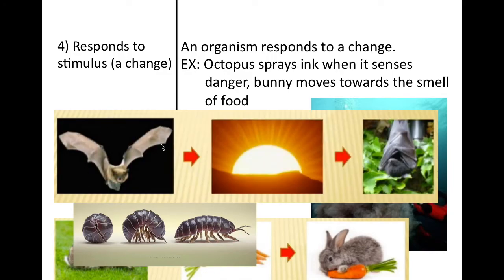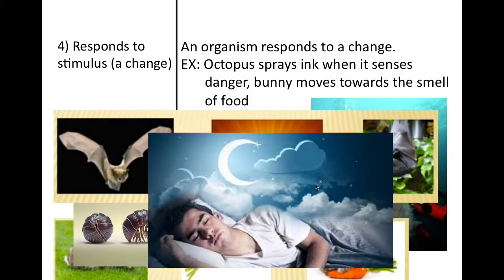Another example of a stimulus is with a bat. We know that bats like to be out at night. While a bat is flying around at night doing its bat things, when the sun comes out, it notices the sun and goes into its cave to sleep. Whereas for us, when it gets dark, we get tired. That's just the way we're made — we respond to the stimulus.